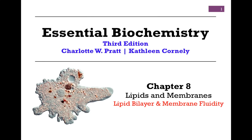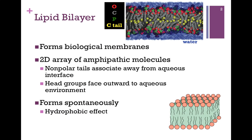We're continuing our studies of Chapter 8, Lipids and Membranes, and in this lesson we want to look at the lipid bilayer and membrane fluidity. The lipid bilayer forms all of our biological membranes, whether it's the outer cellular plasma membrane or the internal compartments. It's a 2D array of amphipathic molecules with both a polar and non-polar region. The non-polar tails associate together away from the aqueous interface, and the polar head groups face out towards the aqueous environment on either side of the membrane.